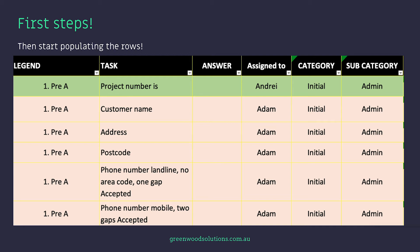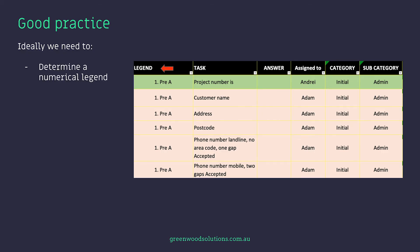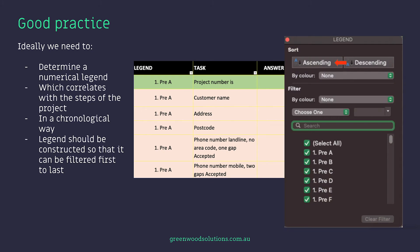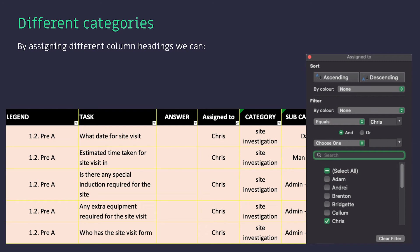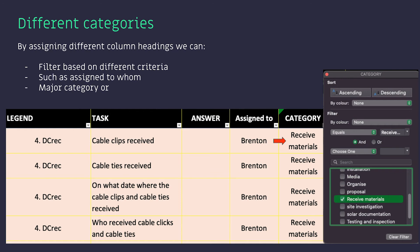As you can see here, we've got a legend, a task, an answer, and a few other columns, and we've populated them. For instance, task project number is there with no answer, assigned to Andre. I've actually created a main category and a subcategory, but you could drill down and create another subcategory — it just depends on how much information you want to extract from your spreadsheet. Just be aware, don't go overboard. Ideally, we need to determine a numerical legend, which is very important — it correlates with the steps of the project in a chronological way. The legend should be constructed so it can be filtered first to last. By assigning different column headings, we can filter based on different criteria, such as assigned to whom, a major category, or a subcategory.